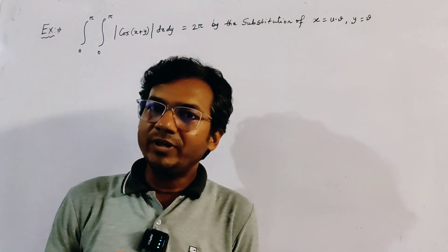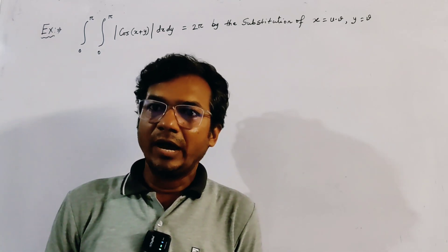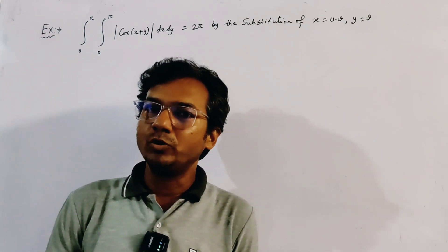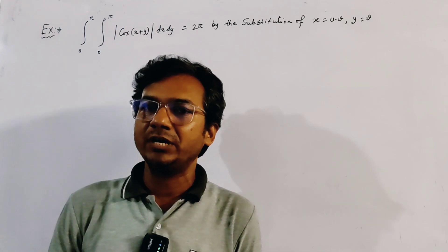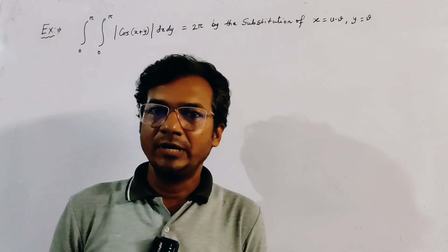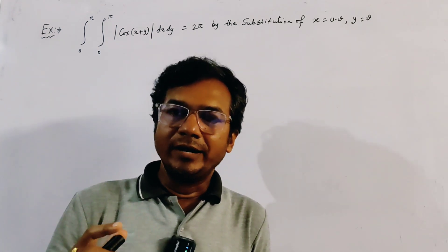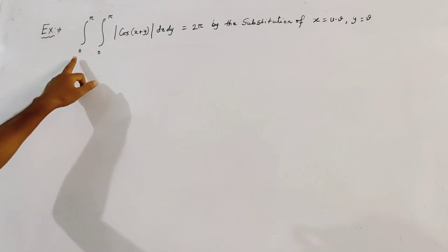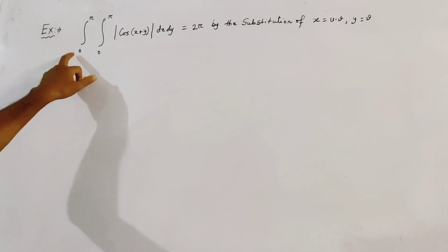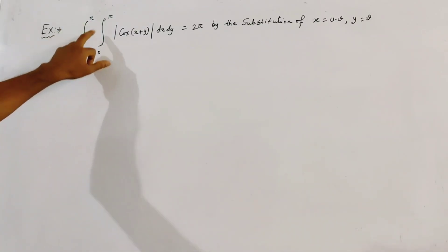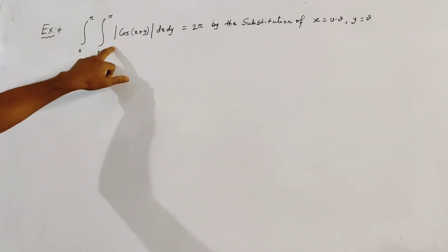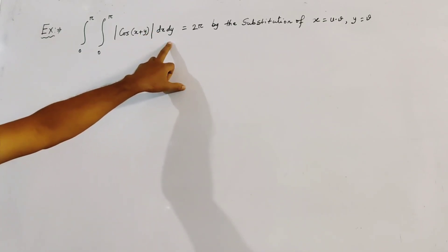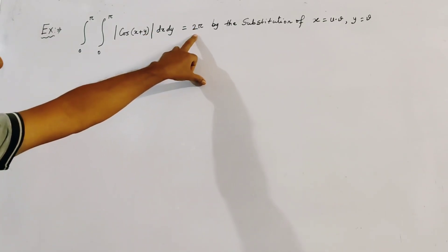Here we evaluate an important double integration from your previous question paper. The integration is double integration over 0 to π and 0 to π of |cos(x+y)| dx dy, and this is equal to 2π.